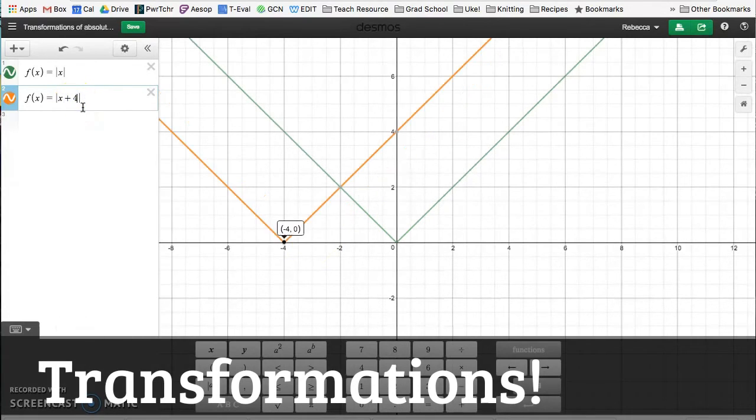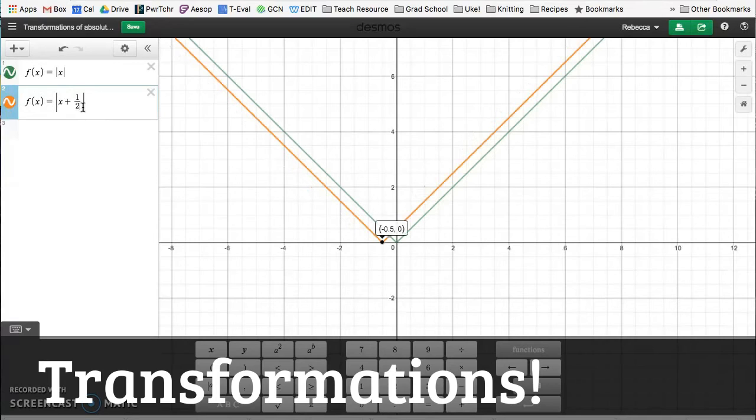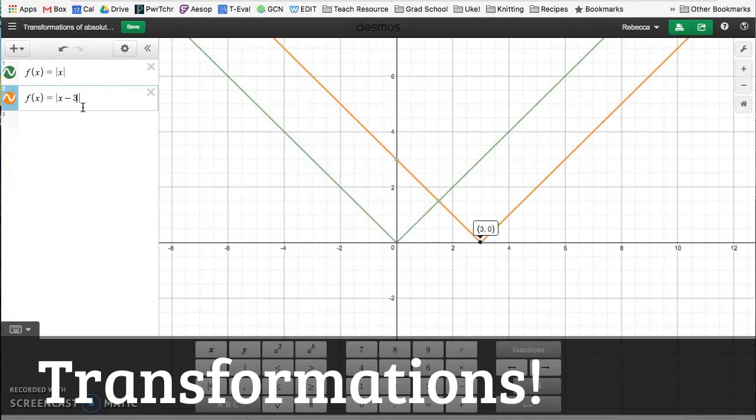Let's see if I made it plus four, it would move to the right four, plus five, plus six. That's how it's going to move, plus a half. If I subtract, it's going to move to the right that many units, however much I do.